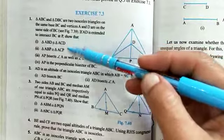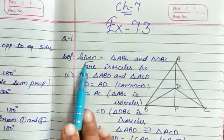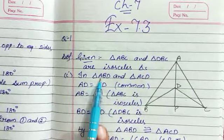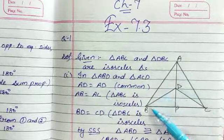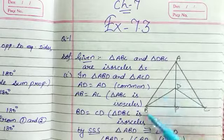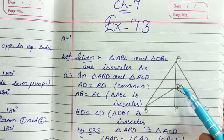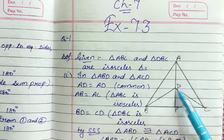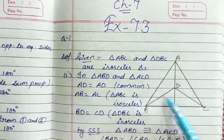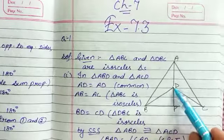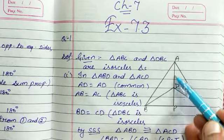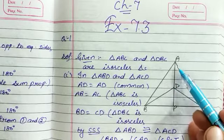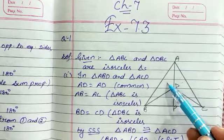We have to prove certain points. Given: triangle ABC and triangle DBC are isosceles triangles. In triangle ABD and triangle ACD: AB is equal to AC, given, because ABC is an isosceles triangle. BD is equal to CD, because BDC is an isosceles triangle. And AD is equal to AD, the common side. So these two triangles are congruent by SSS. Therefore triangle ABD is congruent to triangle ACD by SSS.